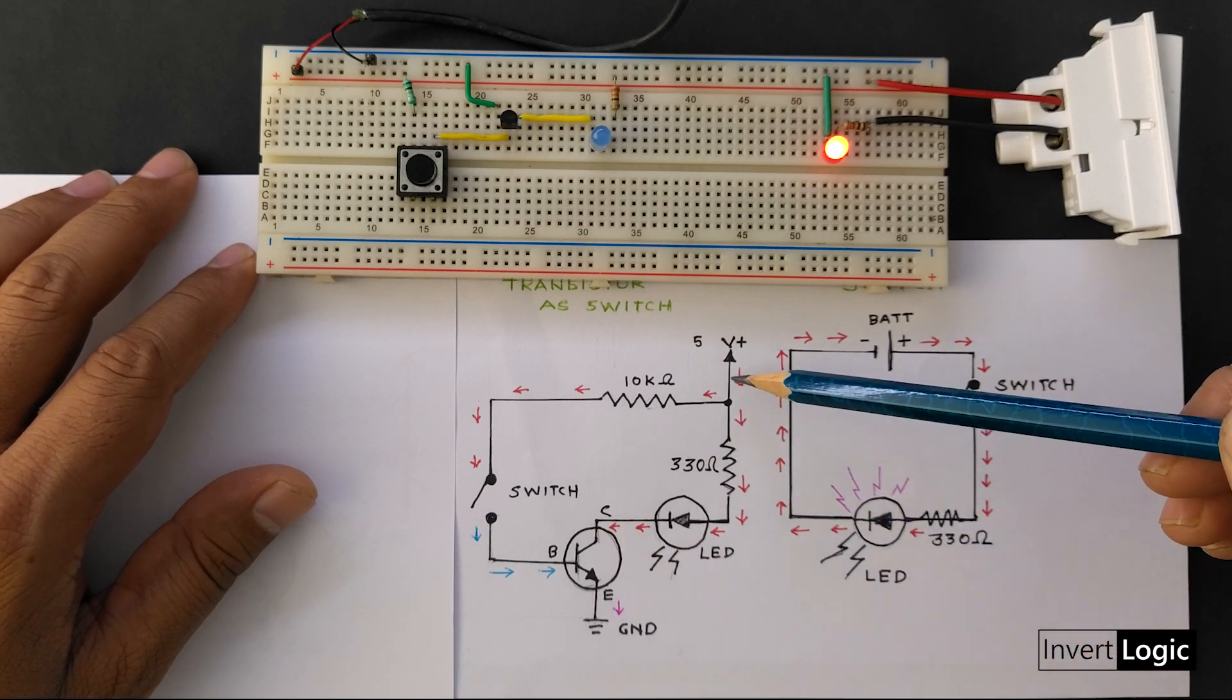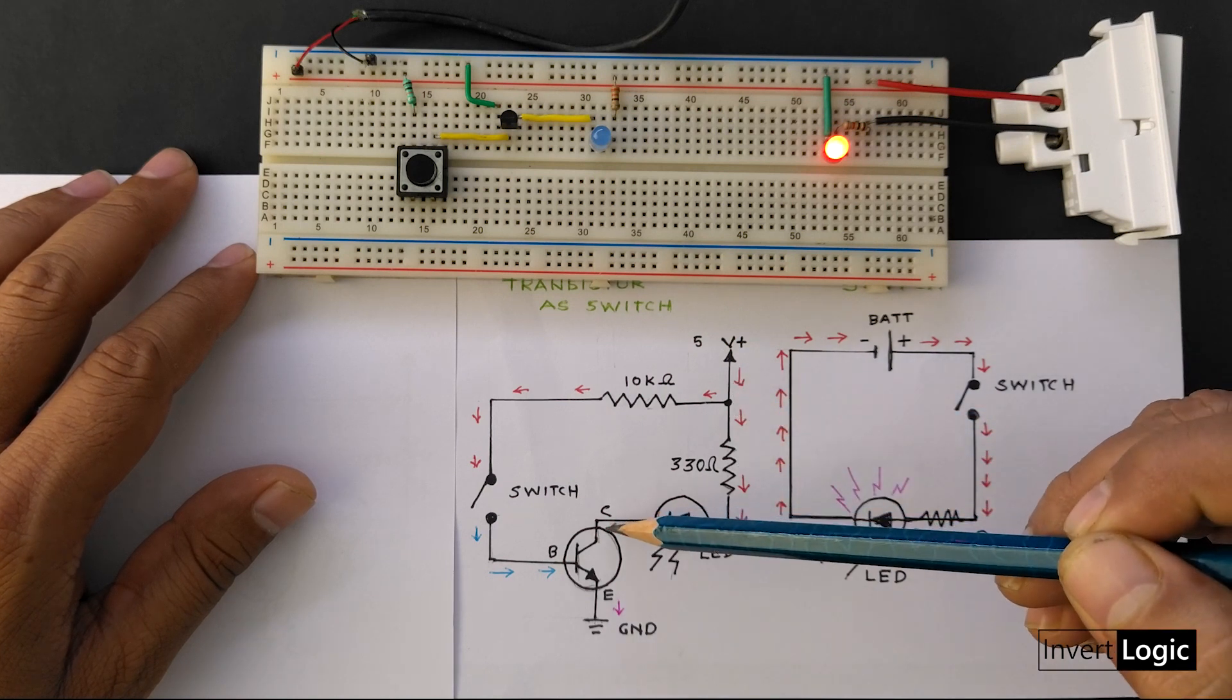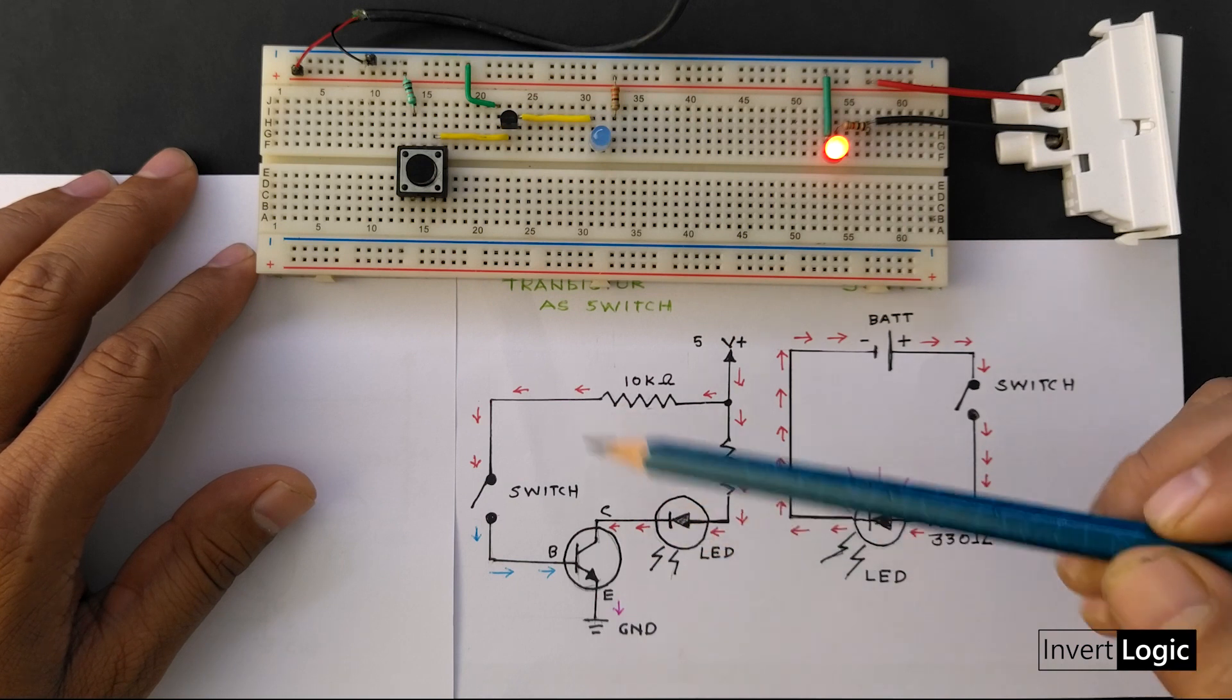So what will happen is that the current will flow from the plus 5 volts from the resistor and to the collector, but since the transistor is off, it will not go further.